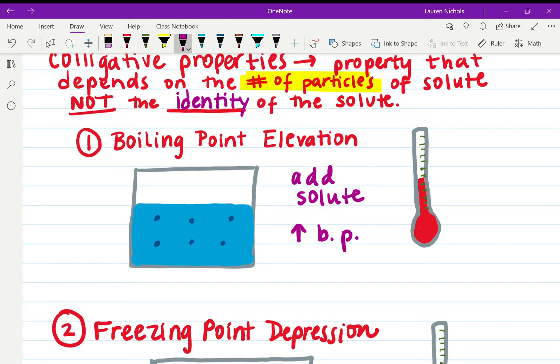If we look here at this beaker, it has blue water and these dark blue dots are water molecules. If they are trying to boil, meaning they go from a liquid into the gas phase, they would escape the liquid and come up into the atmosphere and become a gas. Now the problem is if you start to add your solute in there.